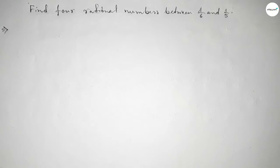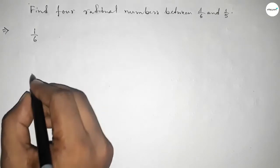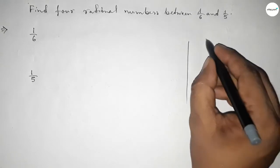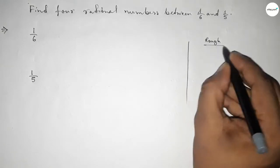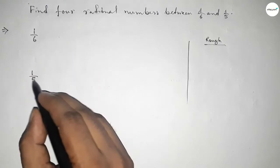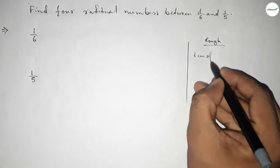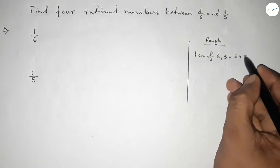1 over 6 and 1 over 5. Now roughly discussing some important calculation here, the denominators of both are not equal, so first we have to find the LCM of 6 and 5, and their product is the LCM.